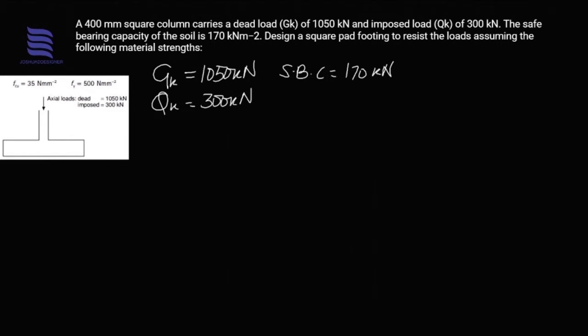We have the safe bearing capacity (S.B.C.) of 170 kilonewtons per meter squared. We are to design a square pad footing to resist the loads assuming the following parameters: fcu is 35 newtons per millimeter squared, fy is 500, with the dead load and imposed load as suggested from the question.